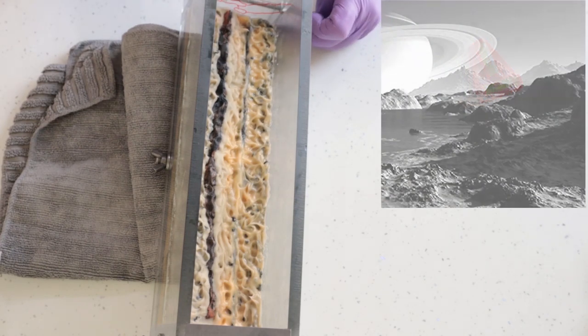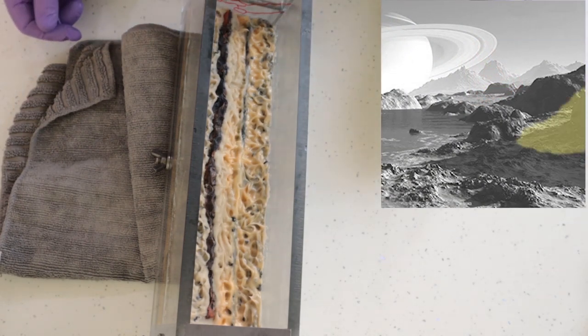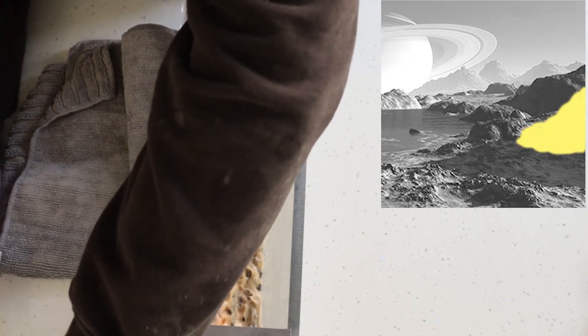Now I've propped my mold up on a tea towel to give us a little bit of an angle and I'm going to start to pour those big dark rocks to the side.